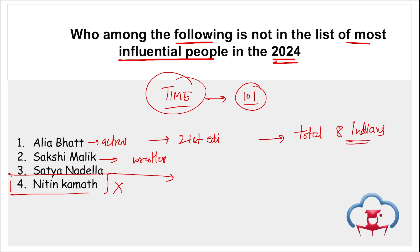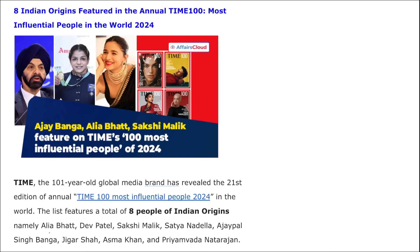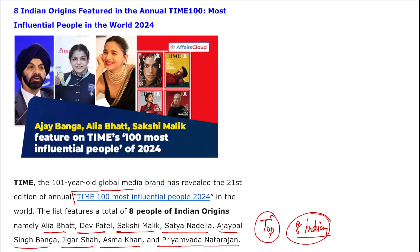Satya Nadella is the CEO of Microsoft, originally from Hyderabad, Telangana. In 2022, he was honored with the Padma Bhushan award for his contribution to trade and industry. Nitin Kamath is the co-founder of Zerodha. The eight Indians listed in Time 100 are: Alia Bhatt, Dev Patel, Sakshi Malik, Satya Nadella, Ajay Pal Singh Banga, Jigar Shah, Asma Khan, and Priyamvada Natarajan. Ajay Pal Singh Banga is the President of the World Bank.